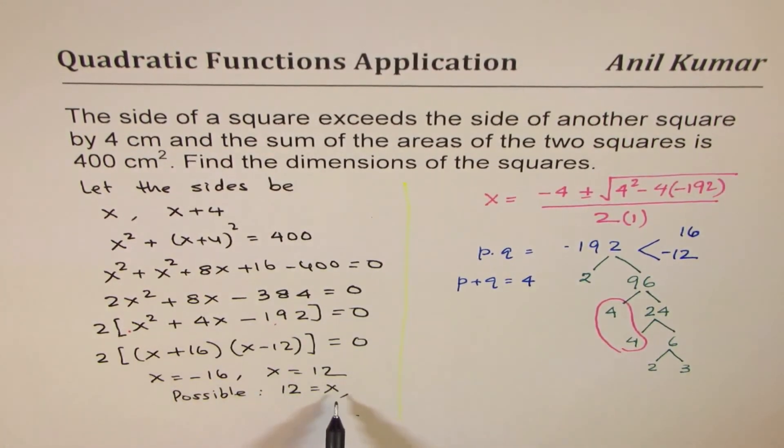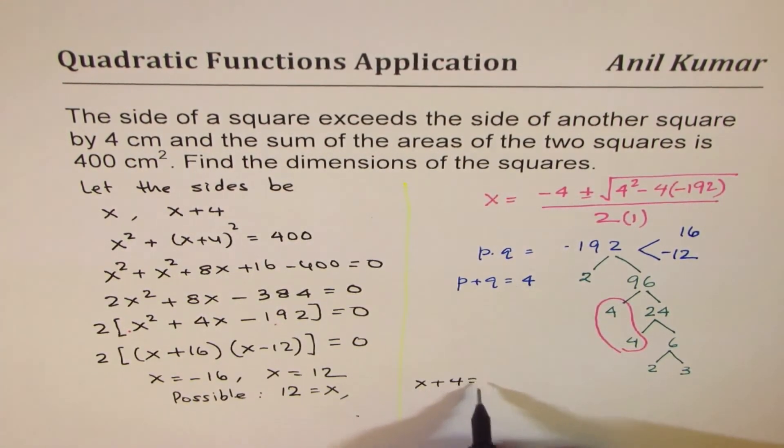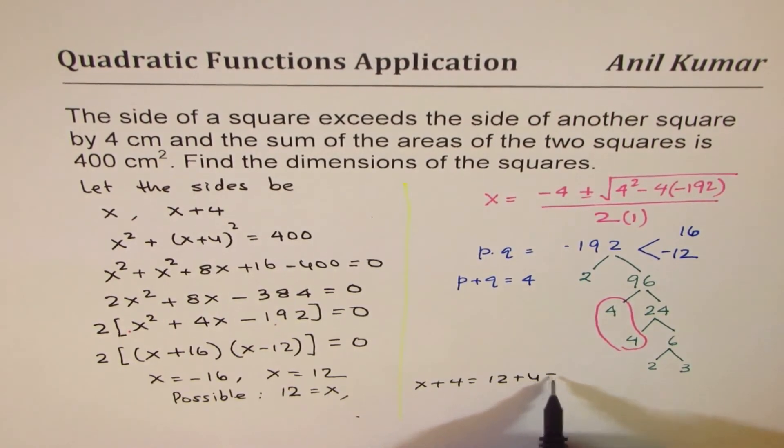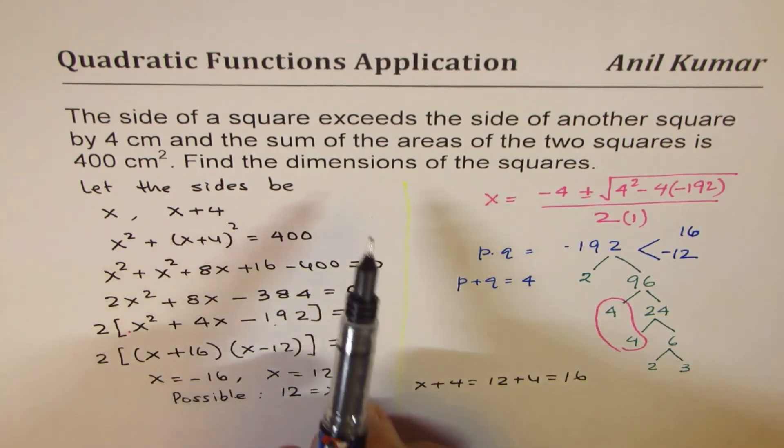Now if one square is 12 units, which is centimeters, the other one will be x + 4, which is 12 + 4 = 16. So we get our answers, which is the dimensions of the squares.